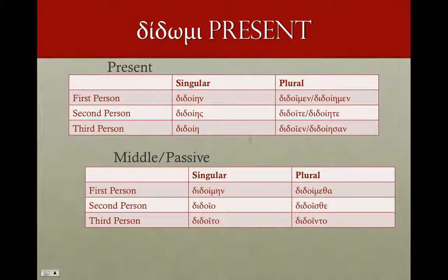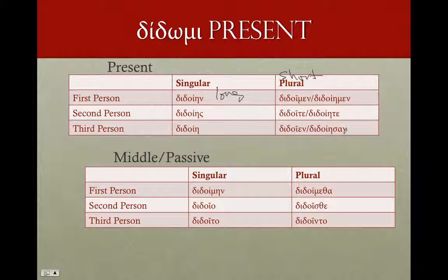Mi verbs — δίδωμι. Commonly the long version in the singular and short in the plural. For the present: διδοίην, διδοίης, διδοίη. The iota is still there in the stem. In the plural: διδοῖμεν, διδοῖτε, διδοῖεν. Or the long versions: διδοίημεν, διδοίητε, διδοίησαν. Long singular, short plural. Middle-passive, perfectly normal: διδοίμην, διδοῖο, διδοῖτο, διδοίμεθα, διδοῖσθε, διδοῖντο. Again, you're still going to see that iota — that's your marker — look to that.